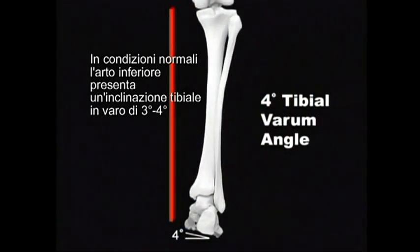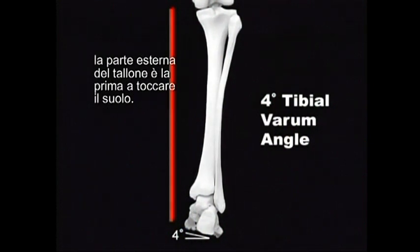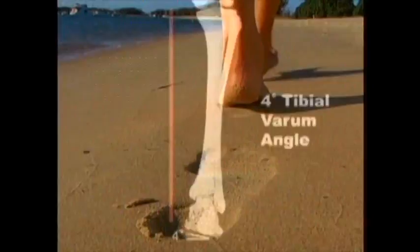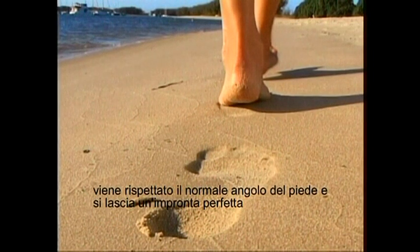The normal lower limb is represented by a four degree tibial varum angle. The lower limb forms a natural inverted position to the ground, and therefore when the foot strikes the ground, the outside edge of the heel hits the ground first. When the foot strikes a soft natural surface like sand, it will give way to accommodate the foot strike angle, forming a natural footprint.